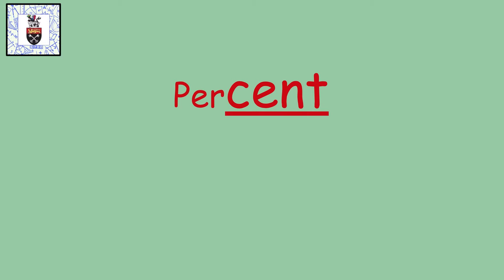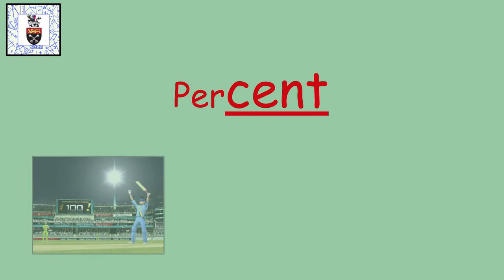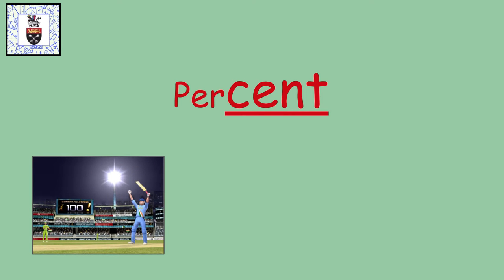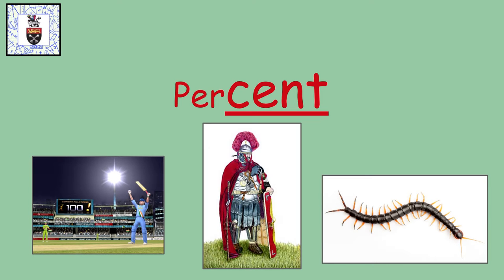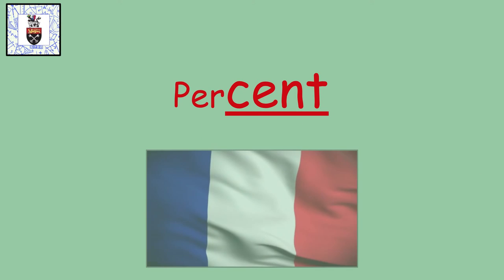There are lots of words with cent in them meaning a hundred, like century—scoring a hundred runs in cricket—or centurion, a soldier in charge of a hundred other soldiers, or even centipede, a creepy crawly with a hundred legs. In French, cent means a hundred.